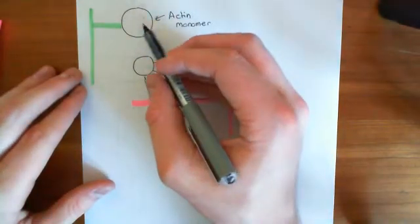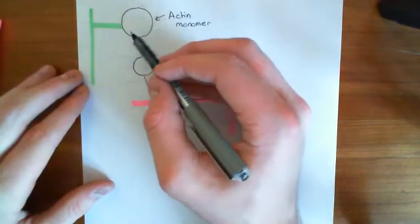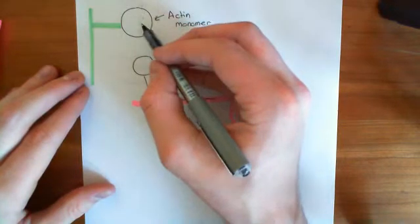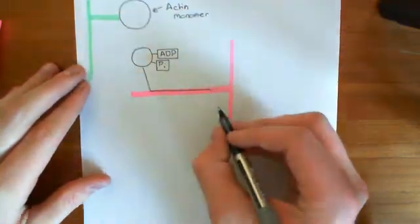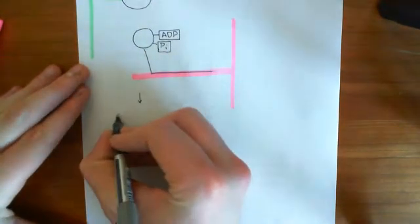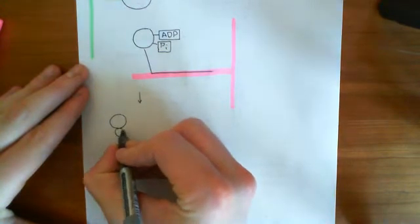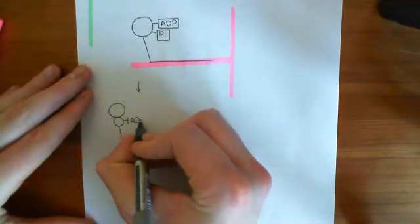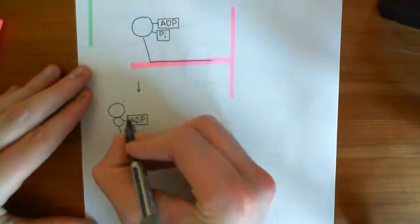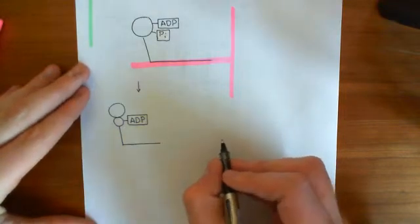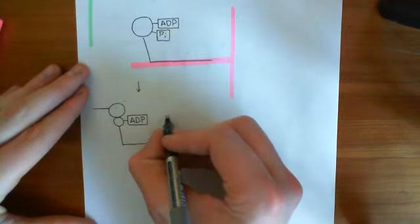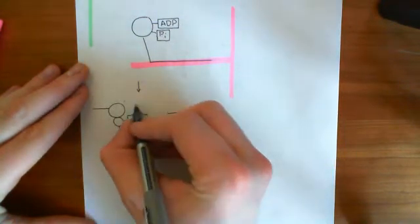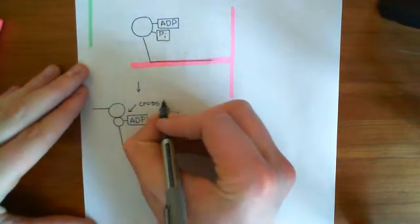Once the tropomyosin has moved and is no longer blocking the myosin binding sites on this actin monomer, what can happen is a process known as cross-bridge cycling. The myosin head is going to bind to the actin monomer, and when it does so, it will drop its inorganic phosphate. So the first process is: the myosin head binds to the actin monomer, drops its inorganic phosphate, and now only has the ADP molecule bound to it. This connection between the actin monomer and the myosin head is known as a cross-bridge, so this first step is known as cross-bridge formation.